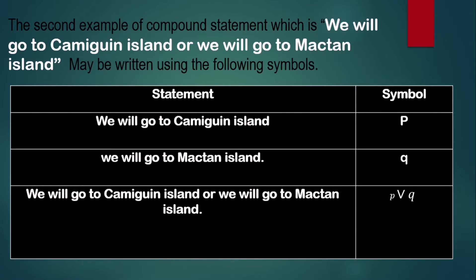The second example of compound statement: 'We will go to Camiguin Island or we will go to Mactan Island.' This may be written using symbols. The first statement is P, the second statement is Q, and the compound statement is written as P ∨ Q, read as 'P or Q'.